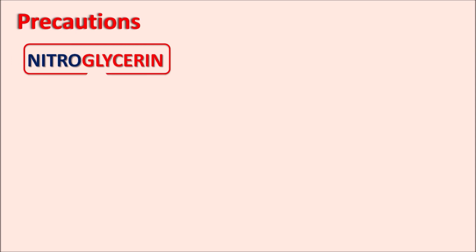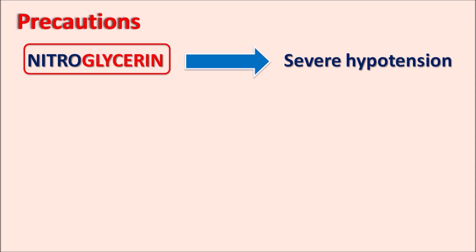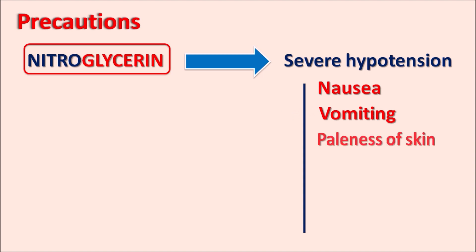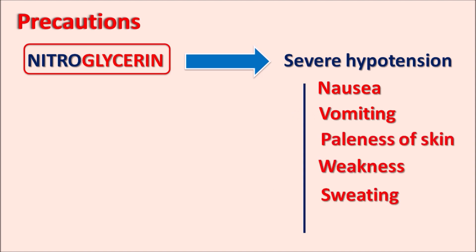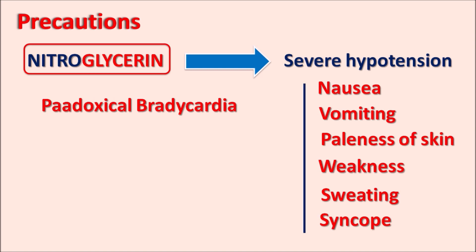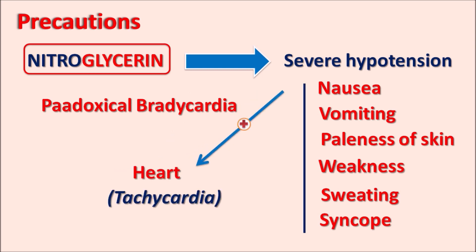What are the precautions? One important precaution of nitroglycerin is that this drug is a vasodilator, so it can produce severe hypotension in patients. It can produce symptoms such as nausea, vomiting, paleness of the skin, weakness, sweating, and syncope. Whenever nitroglycerin is given, a sudden fall in blood pressure may be observed, which may lead to a falling sensation, and it can also produce bradycardia, which is a paradoxical action of nitroglycerin. But when this severe hypotension is untreated, it can stimulate the heart and produce tachycardia by reflex mechanism. So severe hypotension is an important precaution, and if a patient already has volume depletion or a hypotensive state, nitroglycerin should be carefully administered.